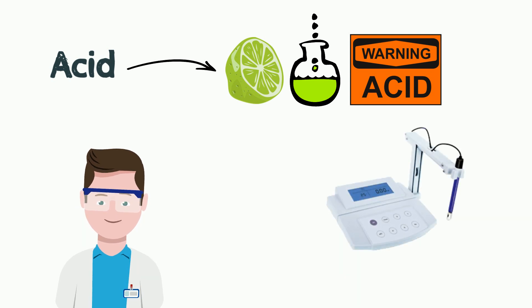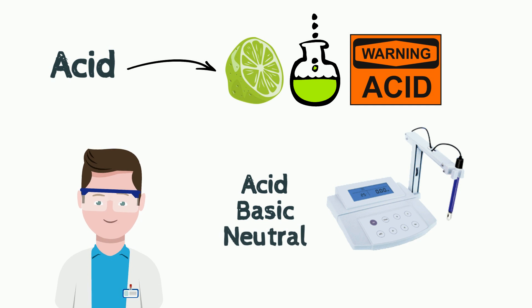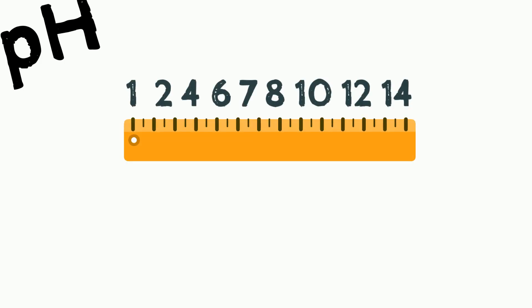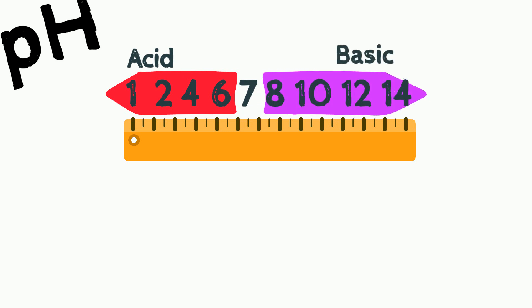The pH scale determines which is acid, basic, or neutral. When the pH is below 7, we say the substance is acid. When the pH is above 7, basic or alkaline. And pH 7 means the solution is neutral.